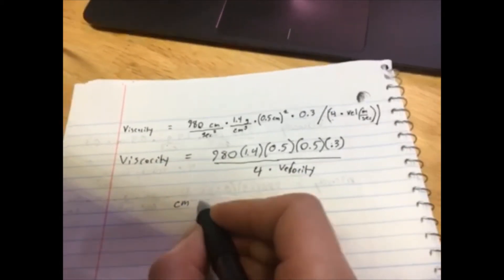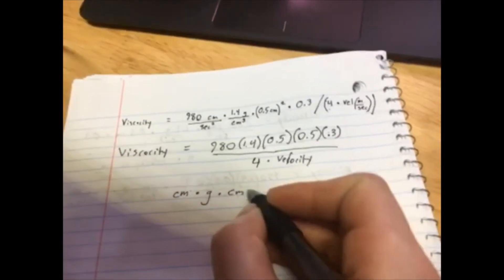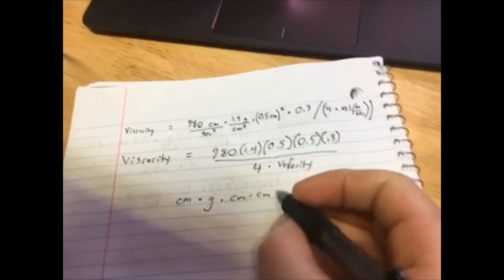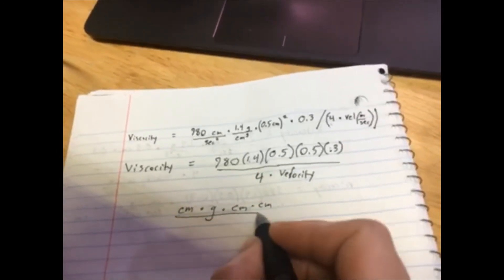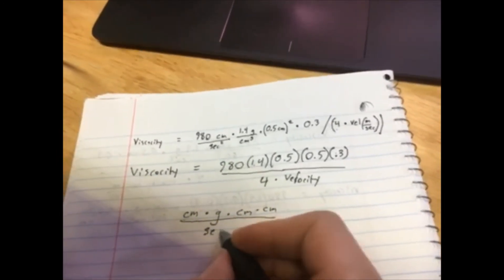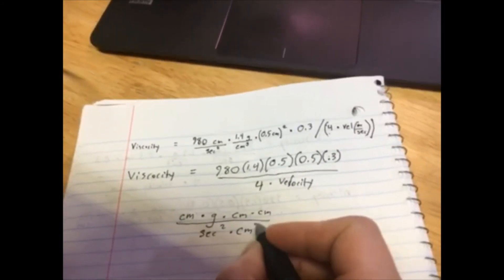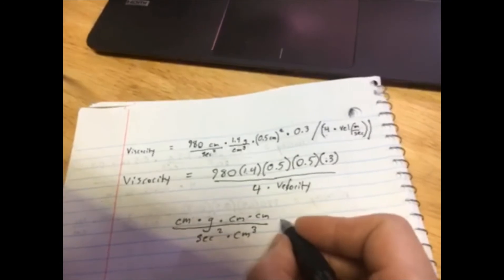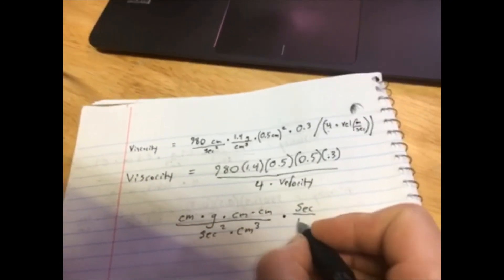centimeters times grams times centimeters times centimeters divided by seconds squared times centimeters cubed times seconds over centimeters.